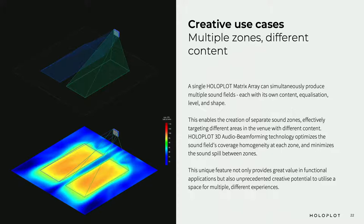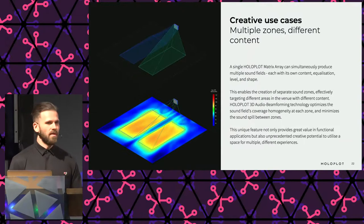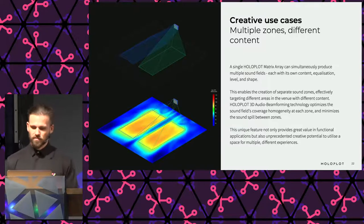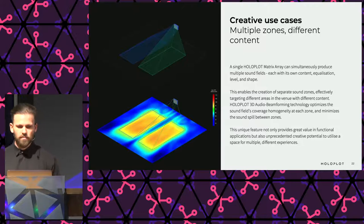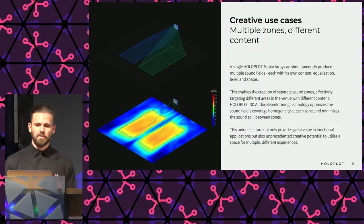With Holoplot, you can configure multiple beams simultaneously from the same array, each with its own content, EQ, level, and shape — easily delivering content to various locations using beams with different properties. Some applications include running a multilingual conference room by physically splitting the room into different beams with different languages, delivering information around exhibits in a museum, or delivering different content to adjacent platforms in a train station.